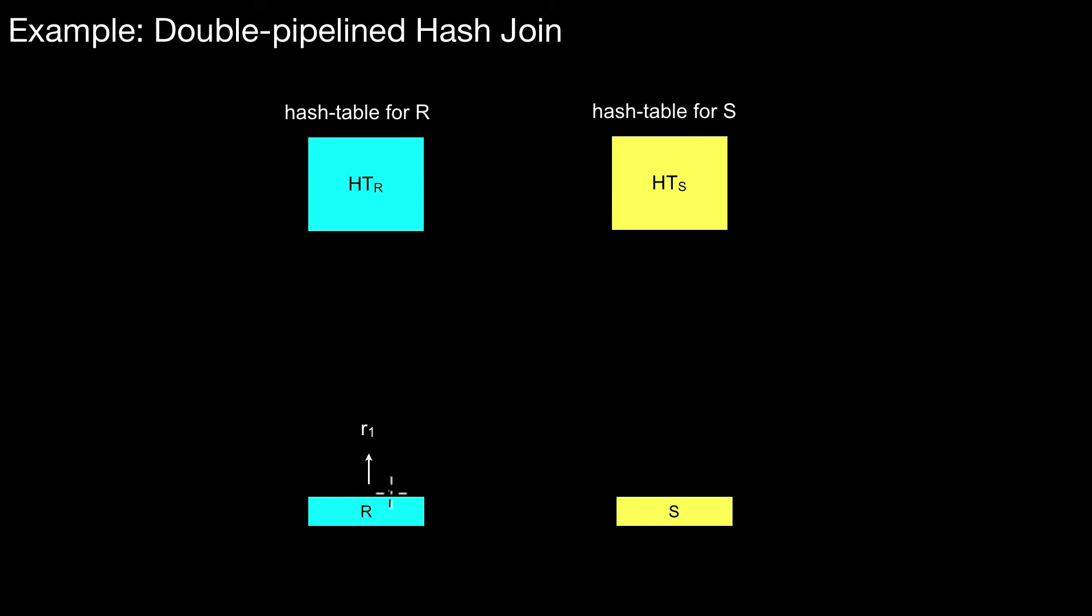In the simple hash join we first inserted all elements from R into the hash table and then we probed everything from S against it. Here we do that concurrently.